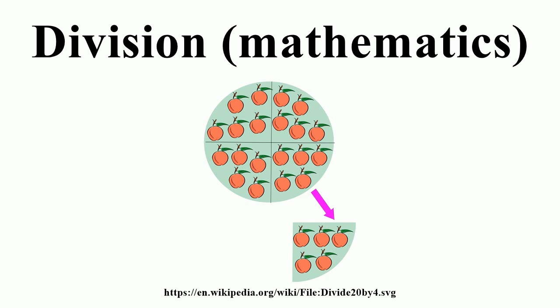Unlike addition, subtraction, and multiplication, the set of all integers is not closed under division. Dividing two integers may result in a remainder. To complete the division of the remainder, the number system is extended to include fractions or rational numbers as they are more generally called.